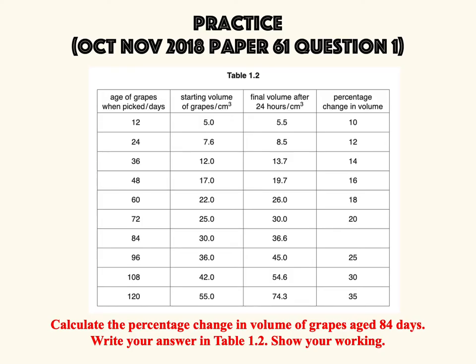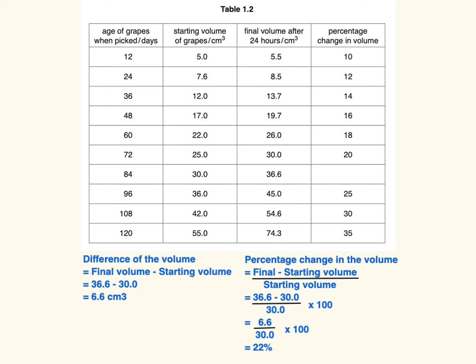Now let's try another question from October/November 2018, Paper 6.1, Question 1. Based on Table 1.2, calculate the percentage change in the volume of ribs at 84 days. Write your answer in the table and show your working. The answer for this question is 22%. Did you get it right?